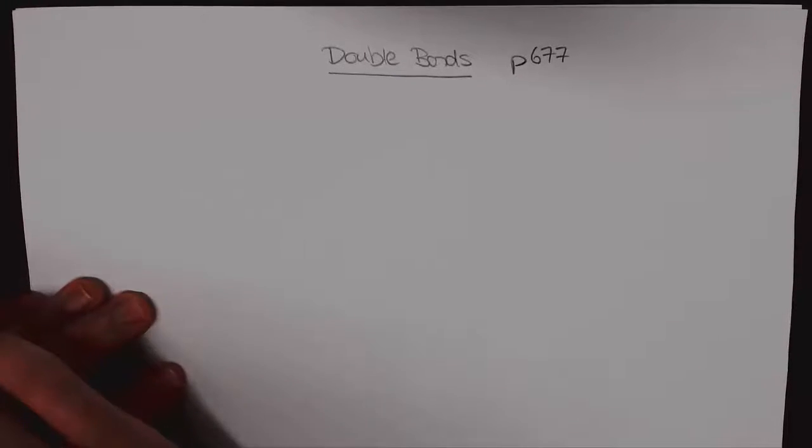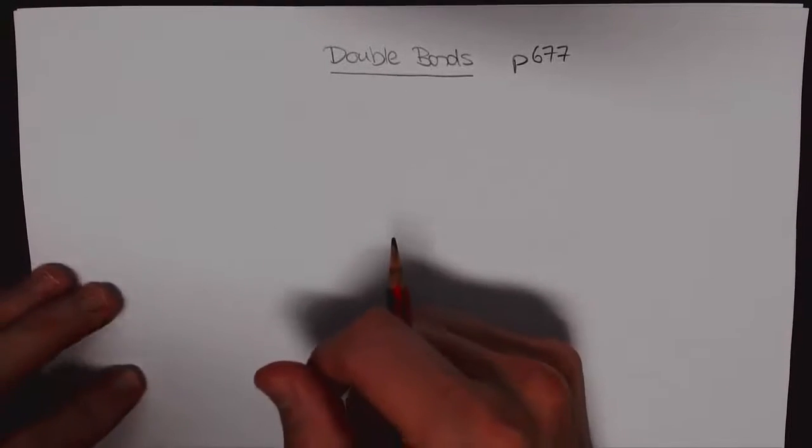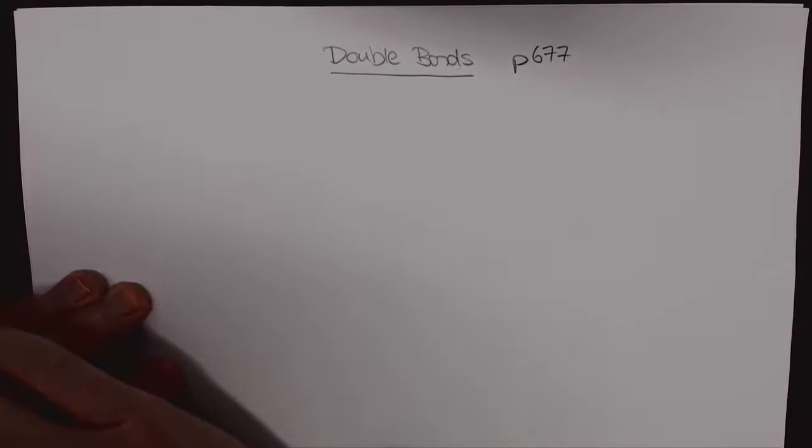The chapter itself, chapter 27, is about the chemistry of sulfur, silicon, and phosphorus and it's within that context that there's some double bond chemistry and that's what we want to focus on.